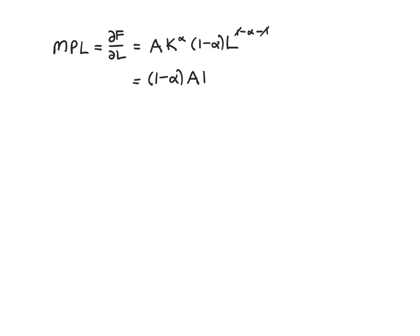Simplifying, we put the 1 minus alpha up front, and then we have A times K to the alpha times L to the negative alpha. We can group terms further: it becomes 1 minus alpha times A times (K over L) to the alpha. So the marginal product of labor depends on the ratio of capital to labor — the higher that ratio, the higher the marginal product of labor.